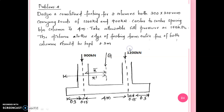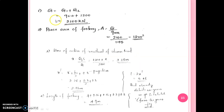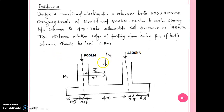The first step is to calculate QC, which is equal to Q1 plus Q2. The second step is to find the base area of the footing: A is equal to Q divided by QN. The third step is to find the line of action of the resultant column load. The line of action distance: Q into x-bar is equal to Q2 into S.